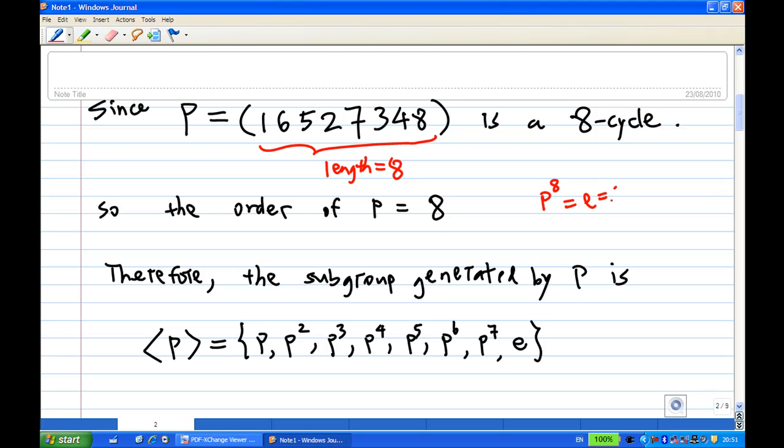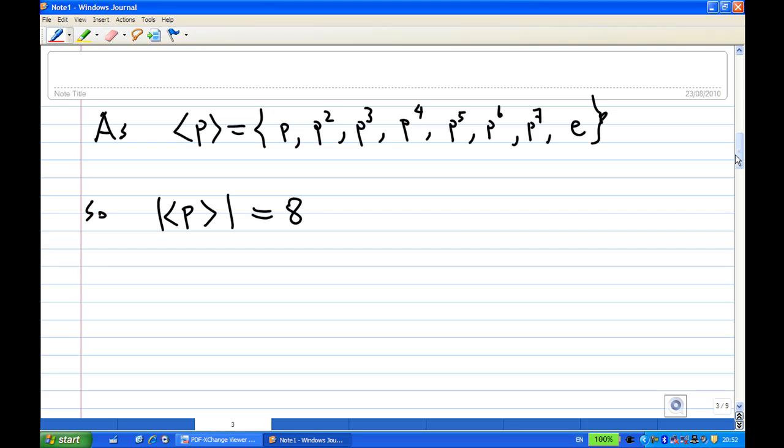This is because P⁸ = E, where E is the identity, consisting of all one-cycles with one element only. Because the subgroup generated by P has 8 elements, therefore the size of the subgroup generated by P is 8.